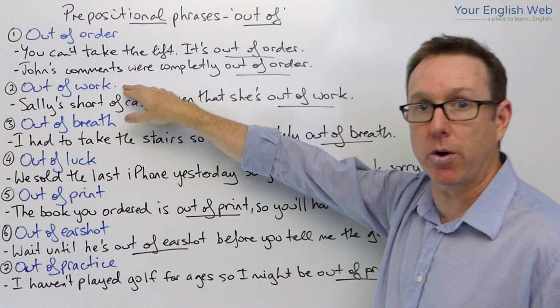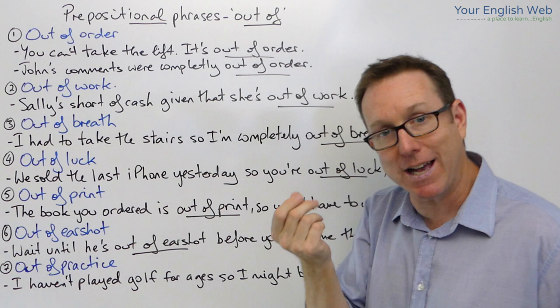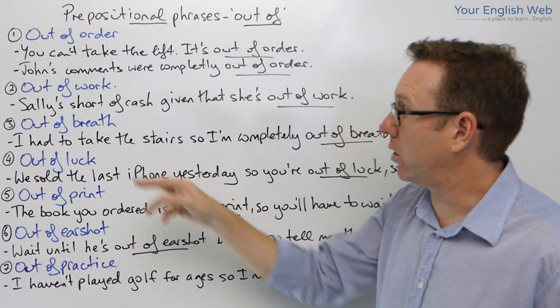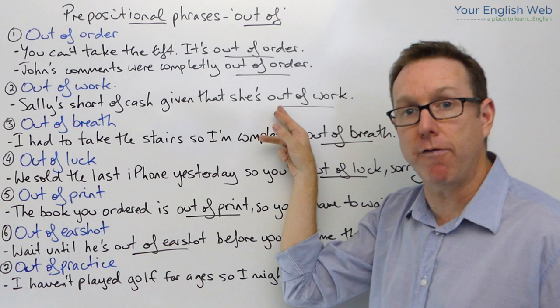Now the next one is 'out of work'. If you're out of work, you're not working — you're unemployed. For example: 'Sally's short of cash given that she's out of work at the moment.' She has no money; she's out of cash because she's out of work. That's another example of a prepositional phrase — 'out of cash' or 'short of cash' — given she's out of work, meaning she's unemployed, she lost her job.